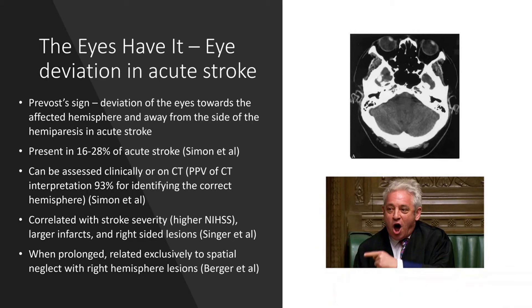Eye deviation can be assessed either clinically at the bedside or on CT. Much of the literature focuses on CT, as it is a useful tool for radiologists interpreting scans, particularly with limited clinical history. One study found a positive predictive value of 93% for identifying the correct hemisphere.